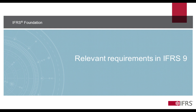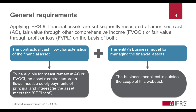The next few slides summarize the requirements in IFRS 9 that are relevant to classifying prepayable financial assets. Section 4.1 of IFRS 9 sets out the general requirements for classifying financial assets. An entity classifies financial assets as subsequently measured at amortized cost, fair value through other comprehensive income, or fair value through profit or loss, on the basis of both the contractual cash flow characteristics of the financial asset and the entity's business model for managing financial assets.